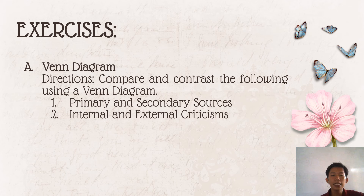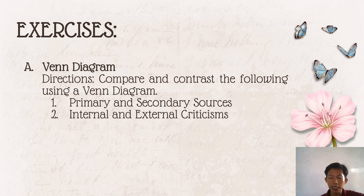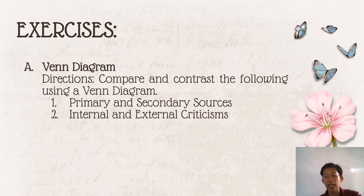These are the exercises to be submitted. First is a Venn diagram — compare and contrast primary and secondary sources, and also internal and external criticism, using a Venn diagram showing differences on each side and similarities in the overlapping middle.